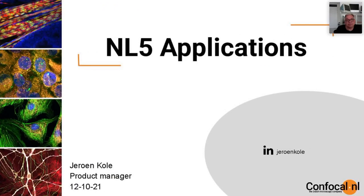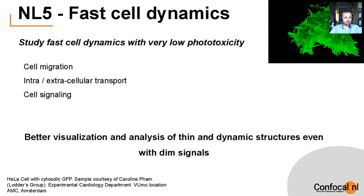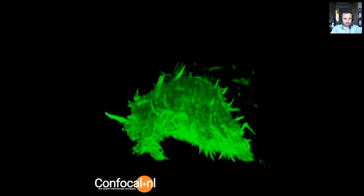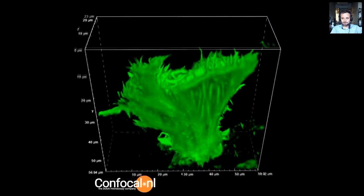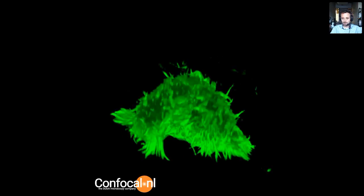Thank you Peter. I'll now talk about the applications of NL5 and then move to the live demo. The NL5 runs at 25 frames per second, allowing you to study fast cell dynamics with very low phototoxicity. Here is an example of a living HeLa cell — a 3D volume recorded over time showing the actin staining and filopodia moving around. This really allows you to study these dynamics in real time in 3D with low phototoxicity.